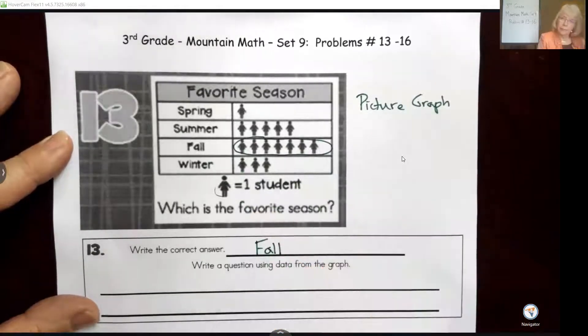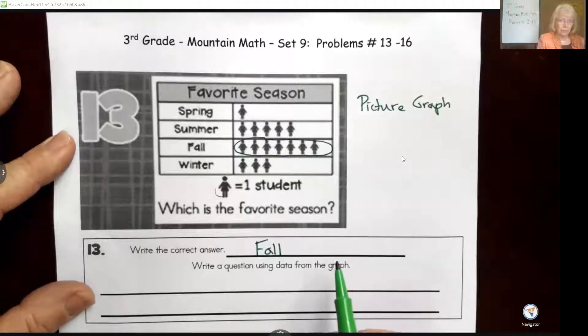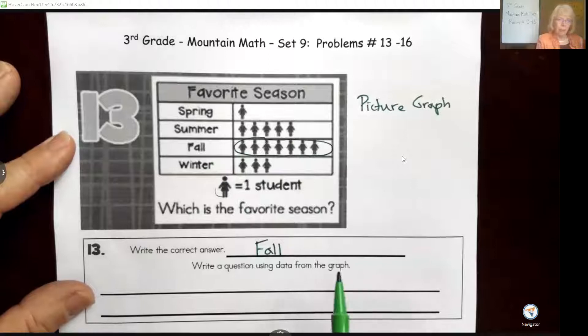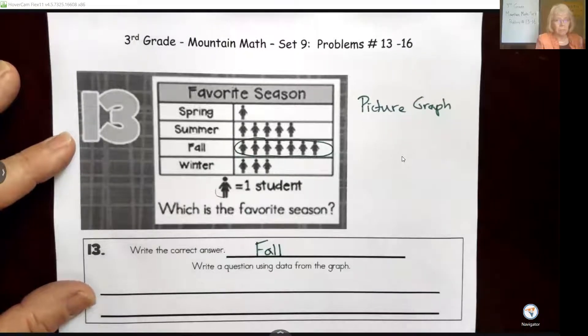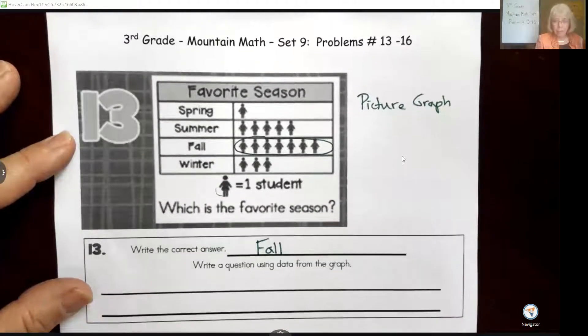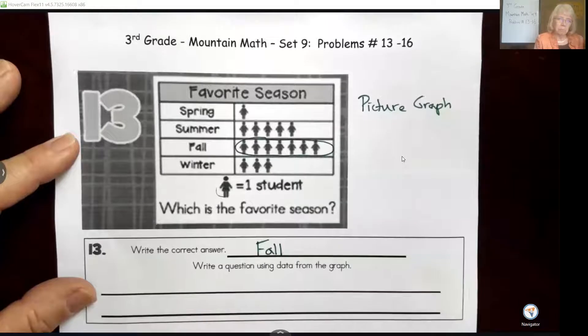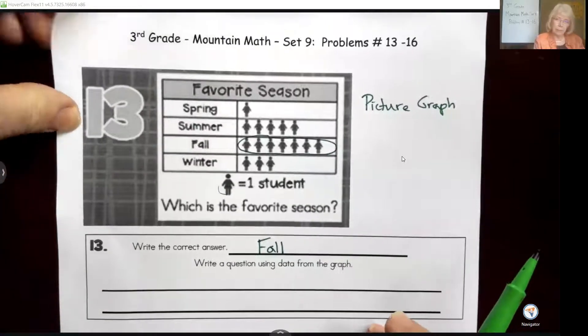Now you're not done. You need to write a question using the data from the graph. How might you write a question that's different than 'what is the favorite season'? You could write 'which is the least favorite season,' or you could ask 'how many students prefer summer?' You pick the question. Make sure you come up with an answer to go with your question.